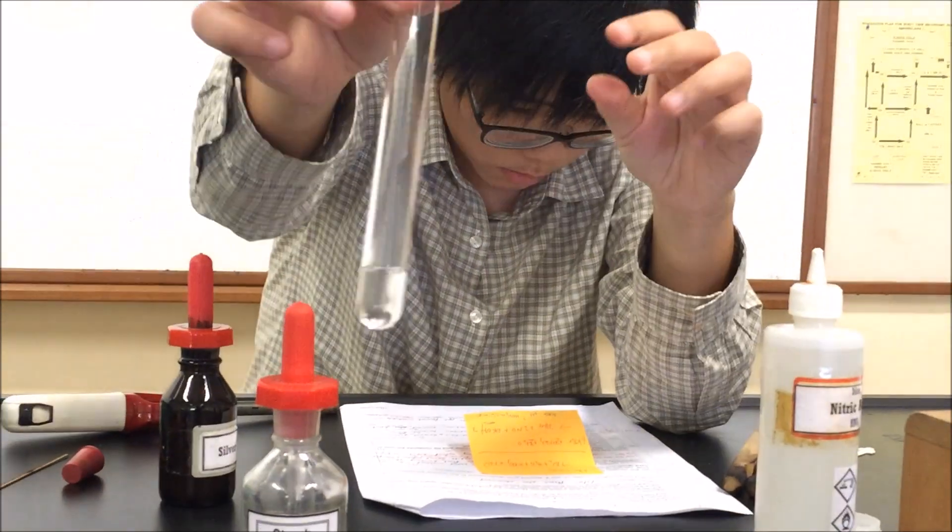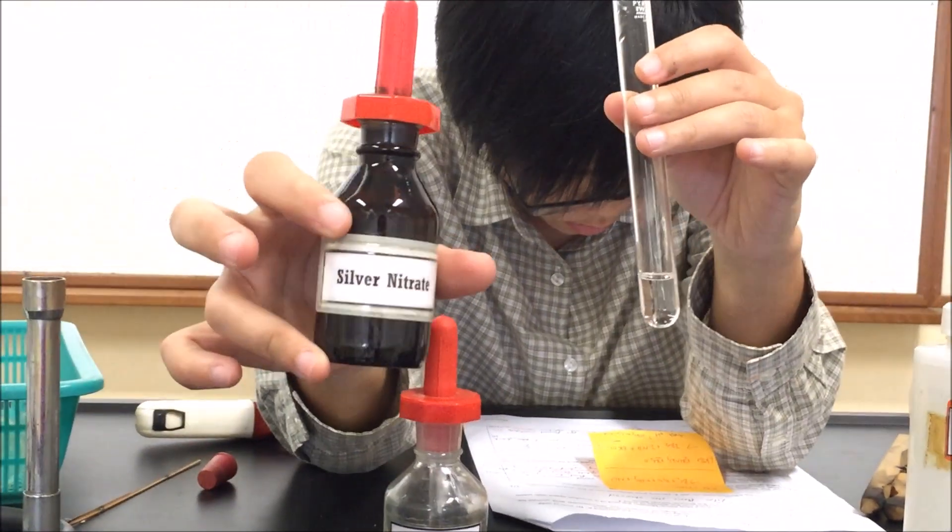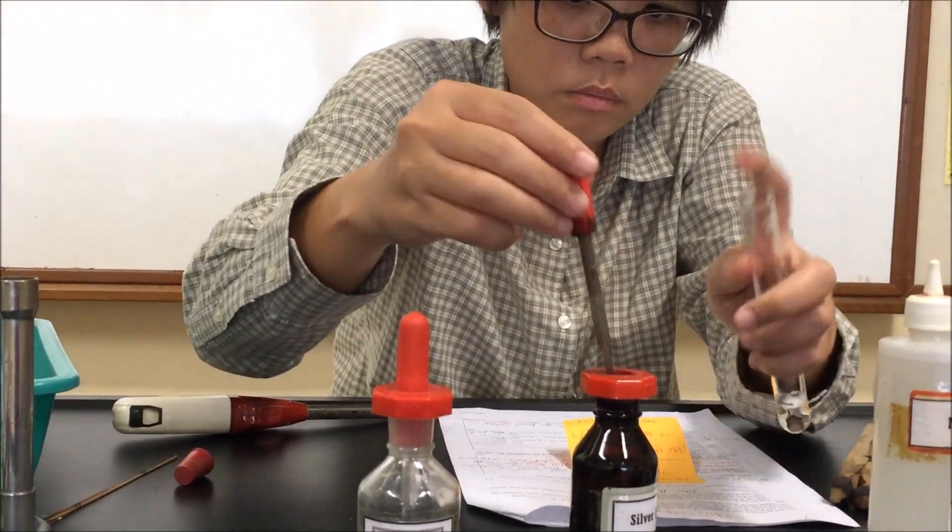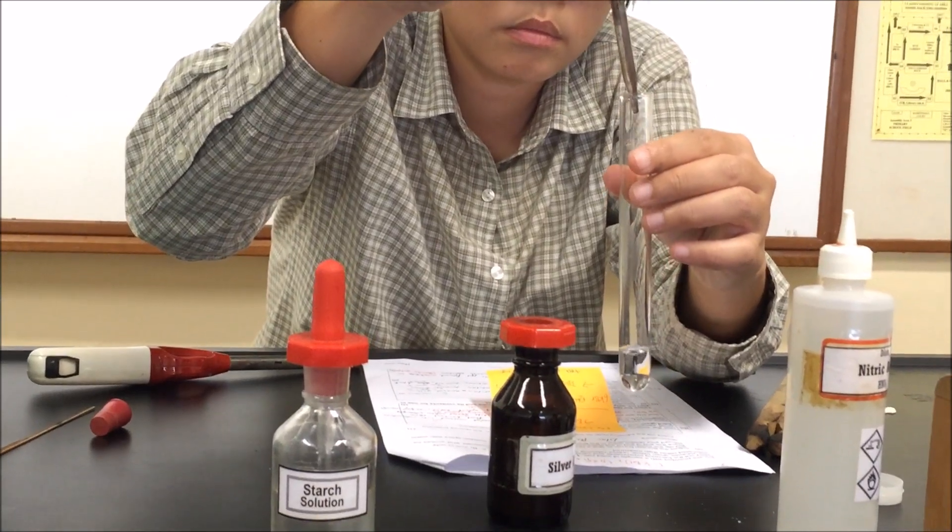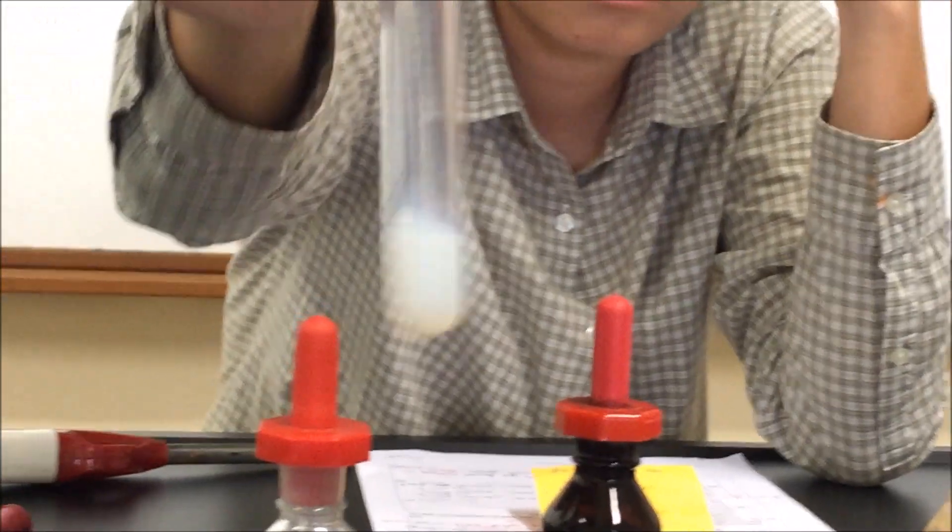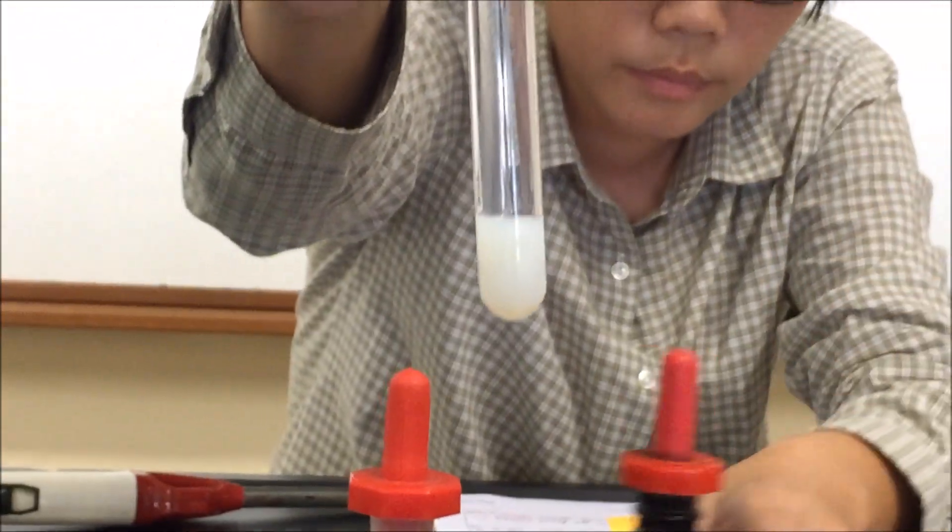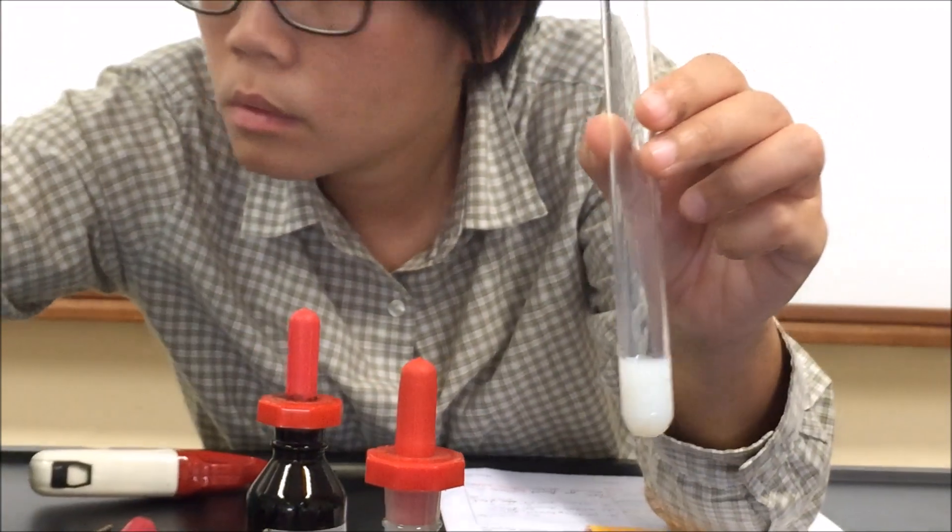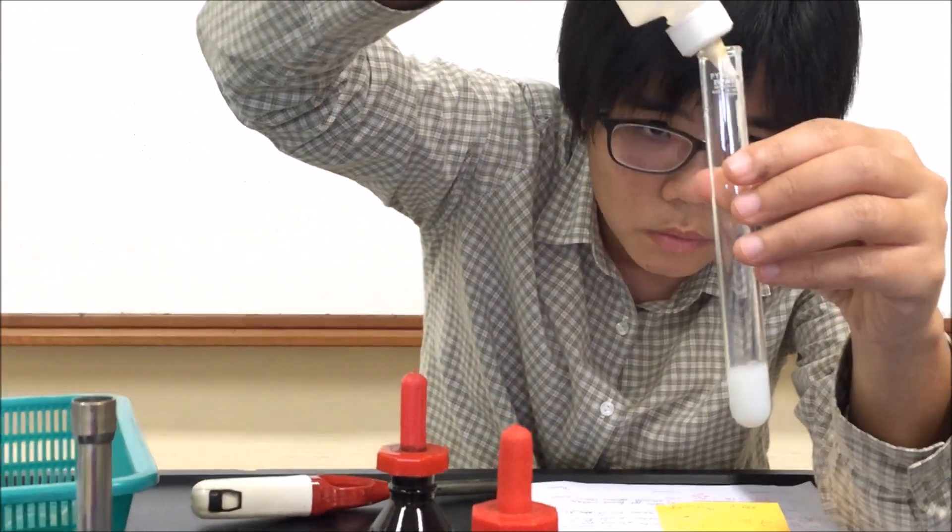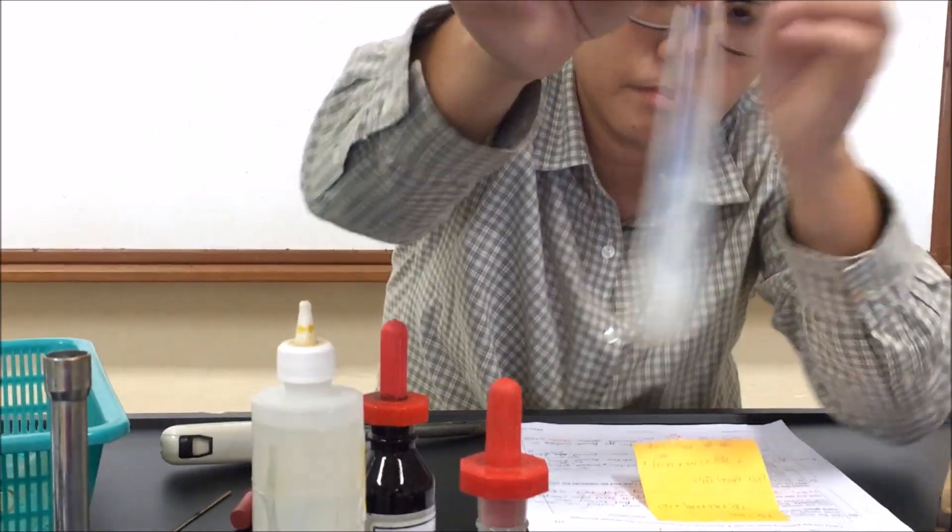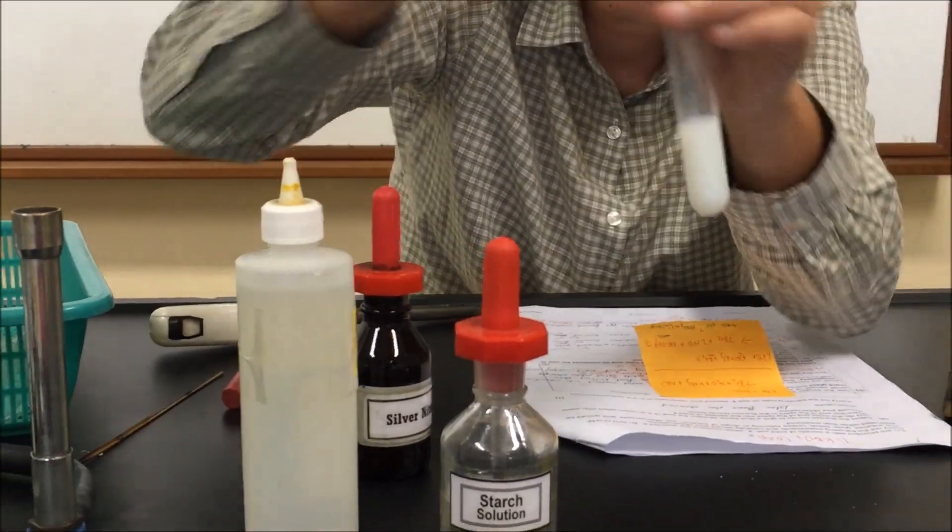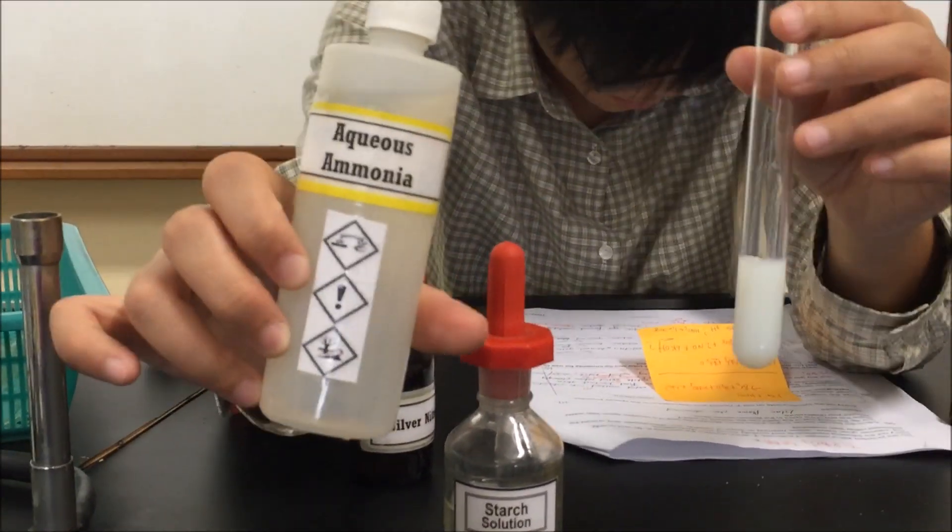Take another 2 cubic centimeters. This is C part 3. Then we're going to add silver nitrate, 5 drops of silver nitrate. Always shake to mix. It looks like a white precipitate, a white precipitate.